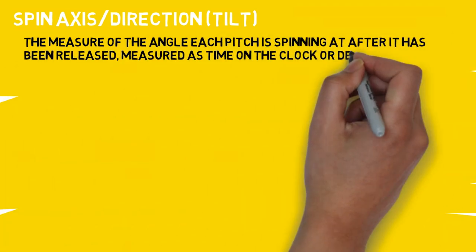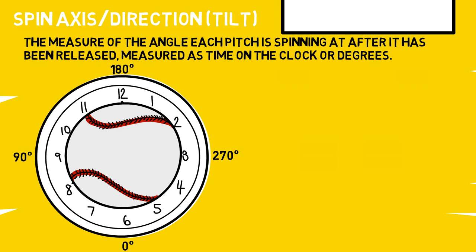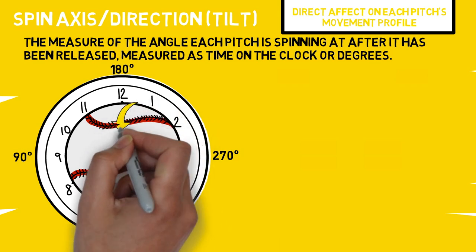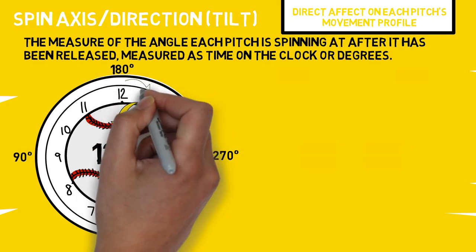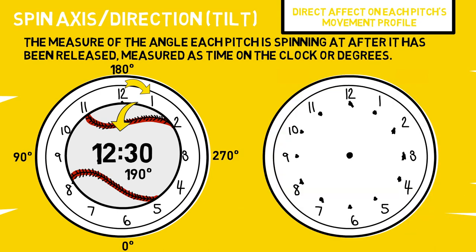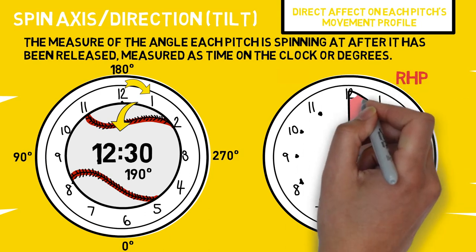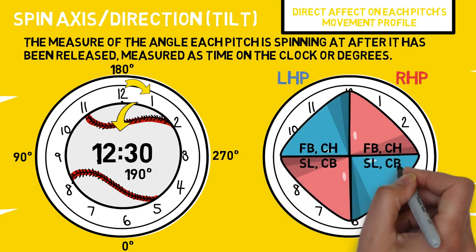Spin axis is a metric labeled several different ways, but it's all measuring the same thing: the angle of the pitch after it has been released. Typically it is measured as time on a clock, but you may also see it described in degrees. This metric has the largest effect on the way each pitch moves. For example, a pitcher throwing with almost pure backspin straight over the top would have a spin direction of around 12:30, or about a 190-degree tilt. Right-handed pitchers typically have fastballs and change-ups that fall into one section of the clock, and sliders and curveballs on the opposite side. For lefties, all you have to do is flip the script.